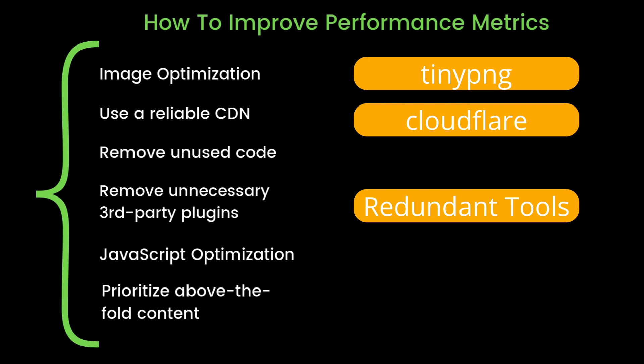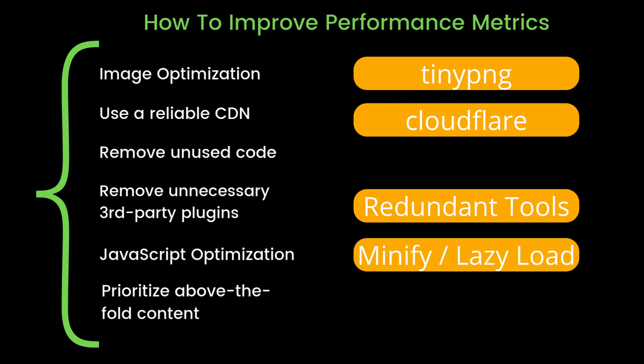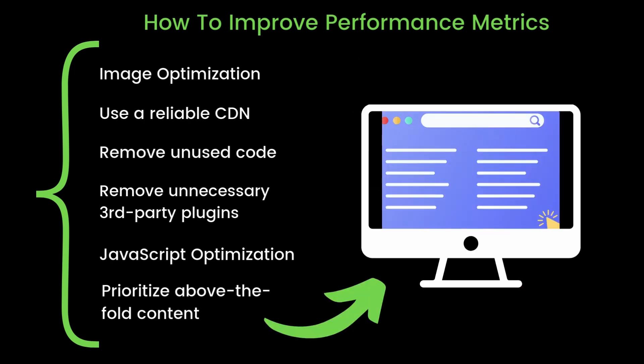Next on the list is JavaScript optimization. If you're using a platform like WordPress, there are a whole bunch of plugins and tools you can use to minify and optimize your JavaScript. The final one is really important: prioritize above-the-fold content, which means the content that loads first — what users see on both desktop and mobile — make sure that is highly optimized.